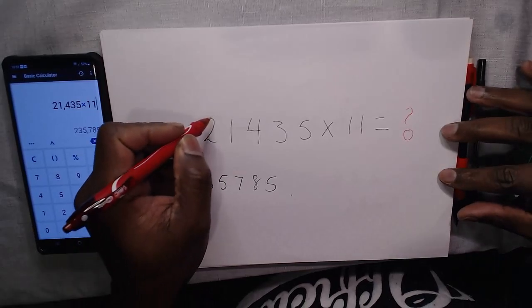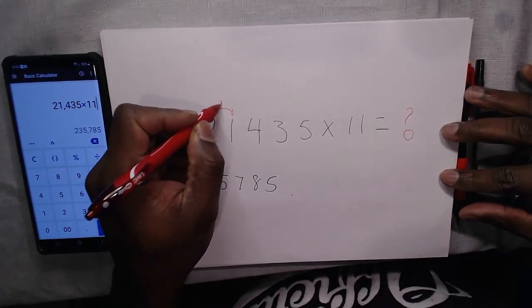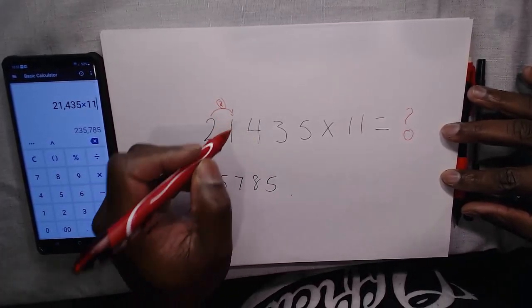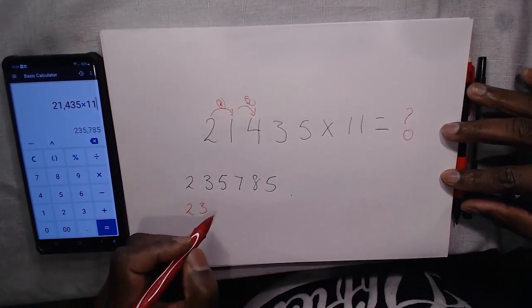And then you simply add the first number to the second number. That gives us 3. Add the second number, you see where this is going, to the third number. That's step 3. Gives us 5.